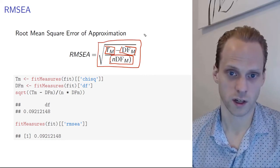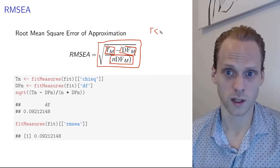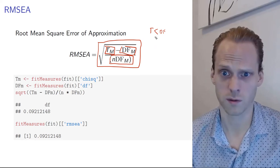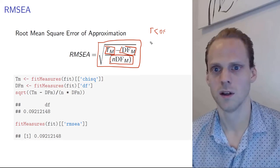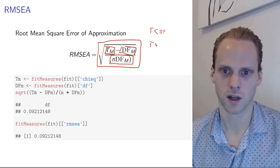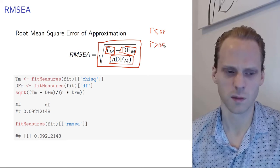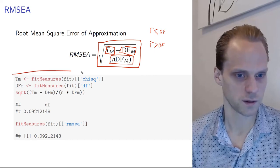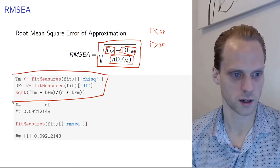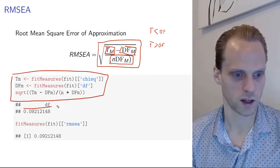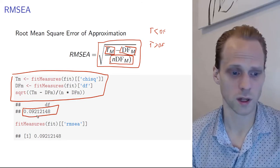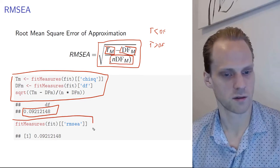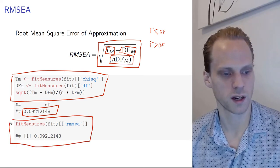If the test statistic is already lower than the degrees of freedom, this will be negative or zero — we just round it up to zero. If it's higher than the degrees of freedom, we see how much higher it is. Using Lavaan code to get our test statistic, we get an RMSEA of 0.0921.